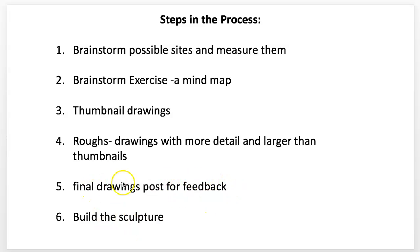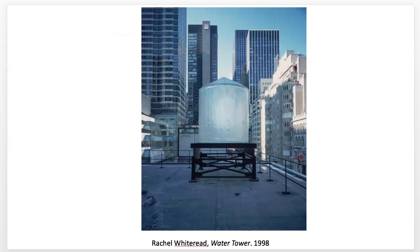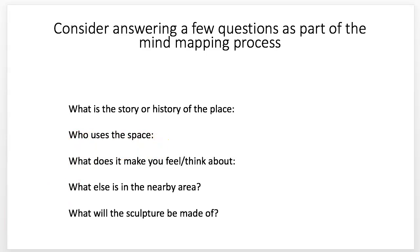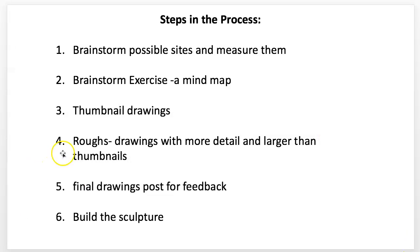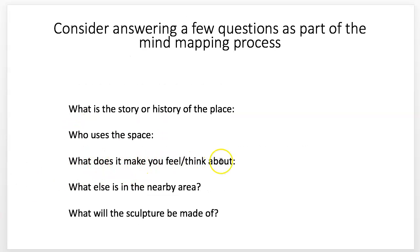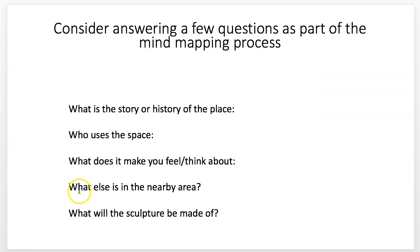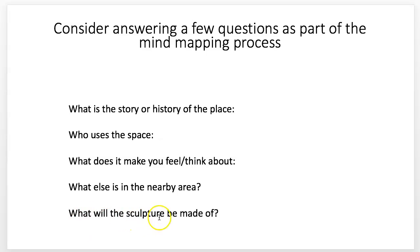After you get your feedback, you want to get a final drawing and then you're going to build it. Early in the brainstorming, consider answering a few questions: What's the story or history of the place? Who uses this space — this was a big problem in the Tilted Arc piece, because Serra messed with the square and most people just wanted to walk diagonally across it. What does it make you think or feel about? What else is nearby the area — like the green belt nearby the airport inspired the rabbit piece.